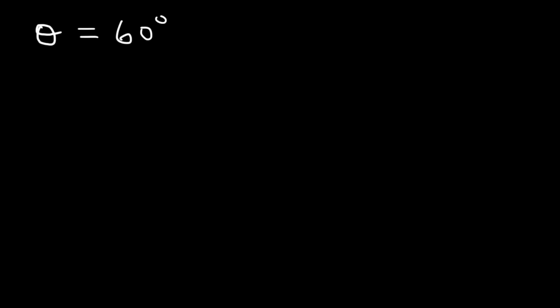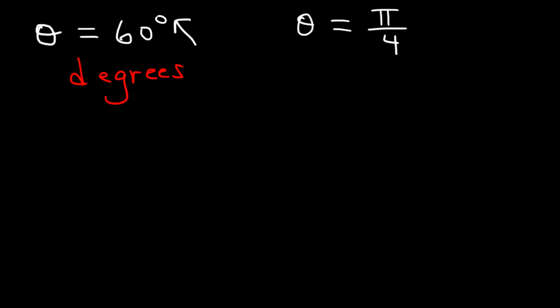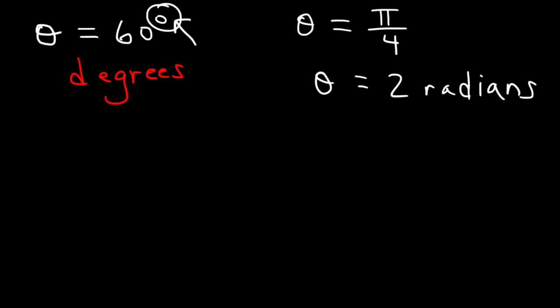The angle can be measured in degrees or radians, so you need to be familiar with both. If you see a little circle on top, the angle is in degrees. If you don't see that circle, the angle is in radians. For example, if theta is equal to 2, that is two radians — anytime you see a number without the little circle, it's radians.